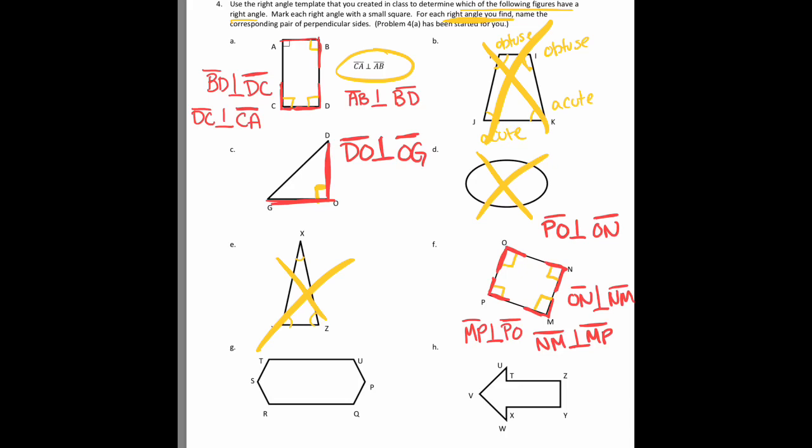We're going to go down to example G, where it looks like there are no right angles. I actually have all obtuse angles, so there's no way for there to be any perpendicular sides.